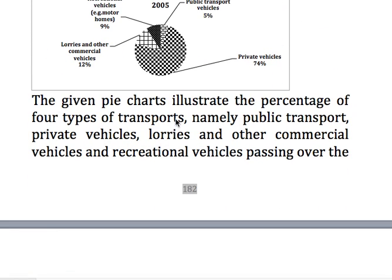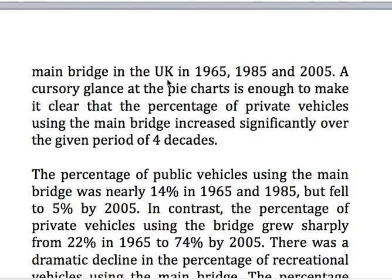The given pie charts illustrate the percentage of four types of transports — namely public transport, private vehicles, lorries and other commercial vehicles, and recreational vehicles — passing over the main bridge in the UK in 1965, 1985 and 2005. A cursory glance at the pie charts is enough to make it clear that the percentage of private vehicles using the main bridge increased significantly over the given period of four decades.